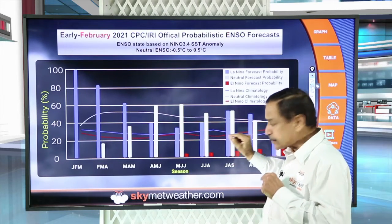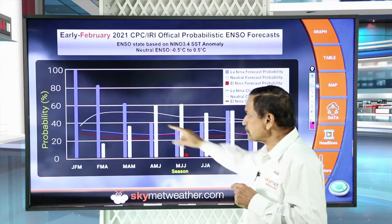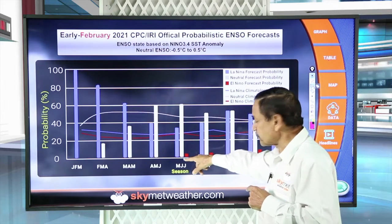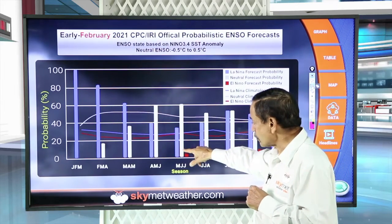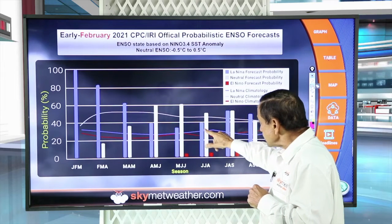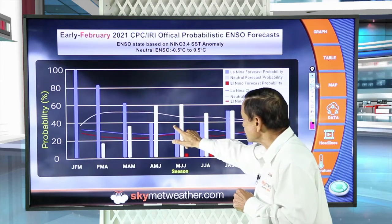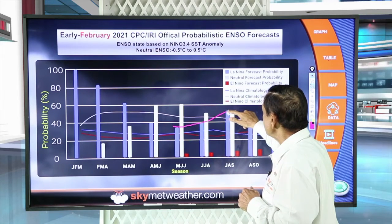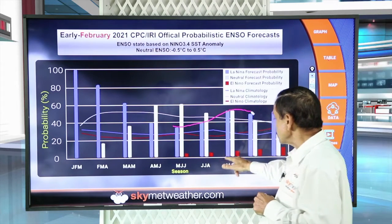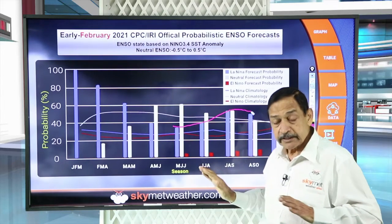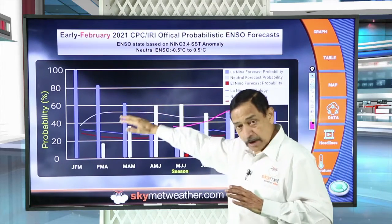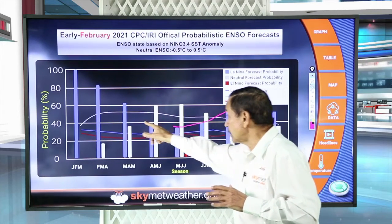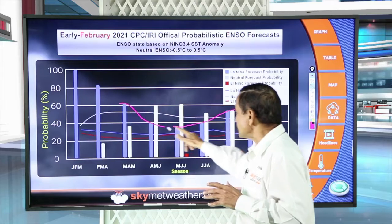El Nino's presence throughout the monsoon season remains not more than 10%, which is negligible. The striking feature of this graph is that La Nina is decreasing, but once the monsoon commences around end of May or June, La Nina conditions start rising again. This is the lowest value of La Nina, and it rises again as we go through the monsoon season — July, August, September.